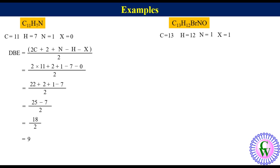So DBE is equal to 2 into 13 plus 2 plus 1 minus 12 minus 1 upon 2 is equal to 26 plus 2 plus 1 minus 13 upon 2 is equal to 29 minus 13 upon 2 is equal to 8.